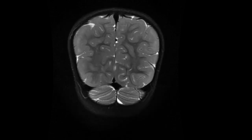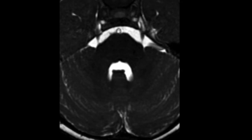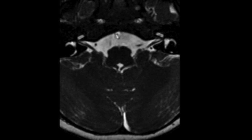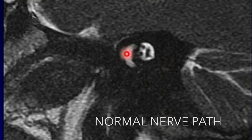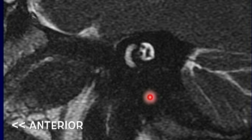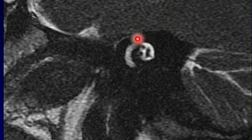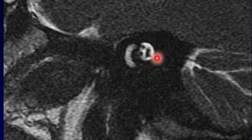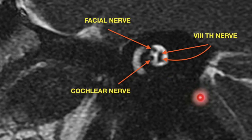We also acquired 3D gradient echo sequences to look for the 7th nerve. The 7th and 8th nerves accompany each other in the cistern as well as the internal auditory canal. These are seen as Bill's bars within the internal auditory canal, wherein the facial nerve is located anterior superiorly, the cochlear nerve is located anterior inferiorly, and the superior and inferior vestibular nerves are located posterior superiorly and posterior inferiorly respectively.